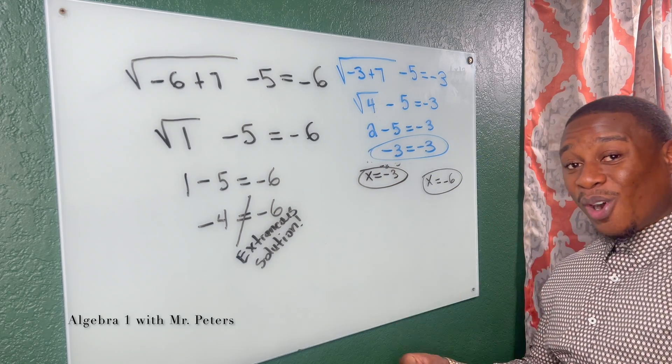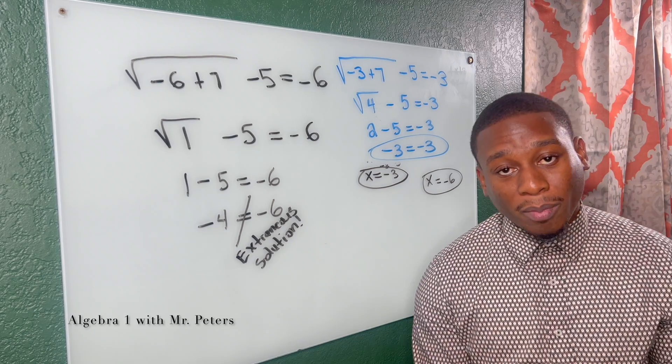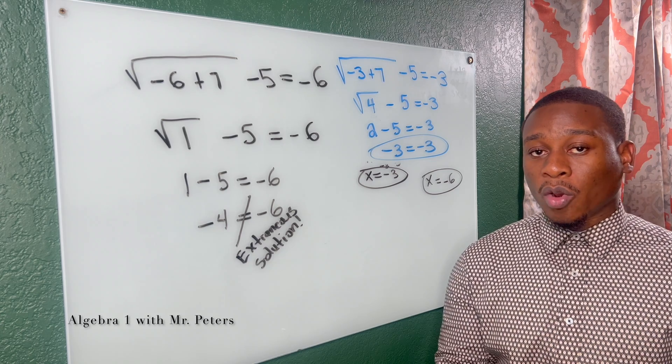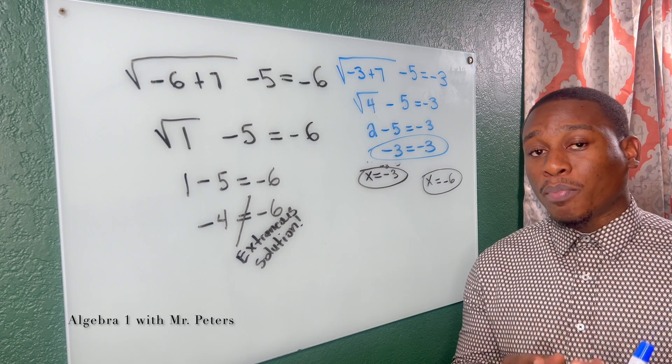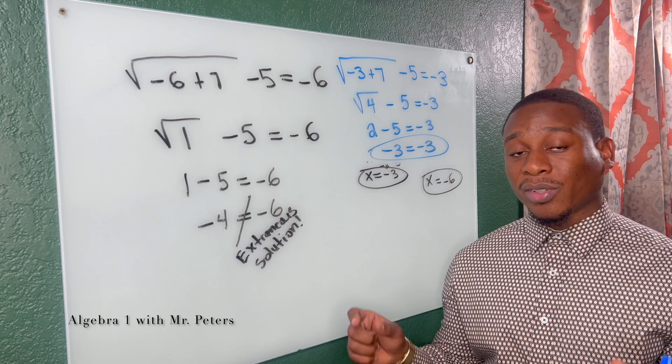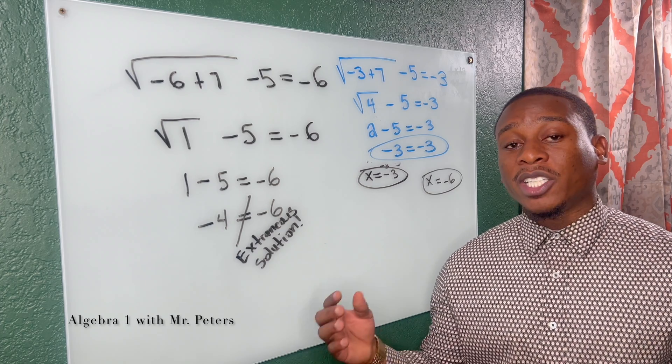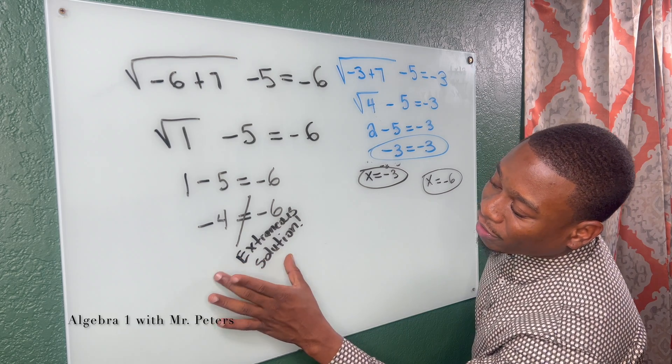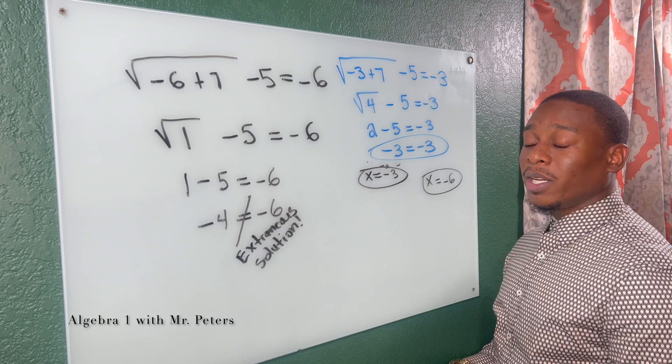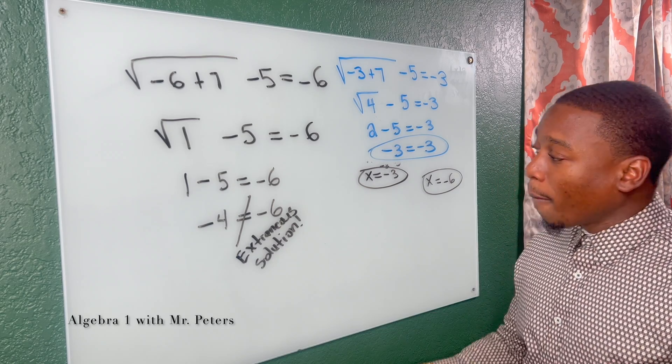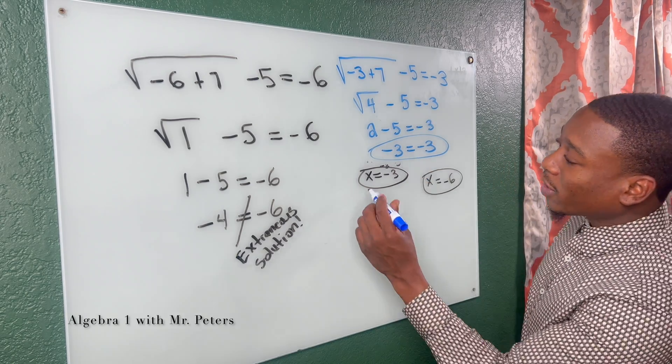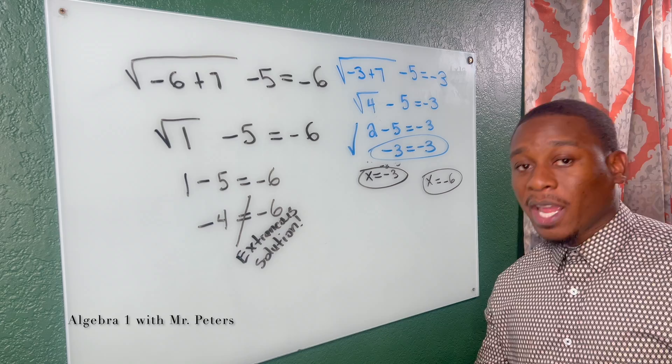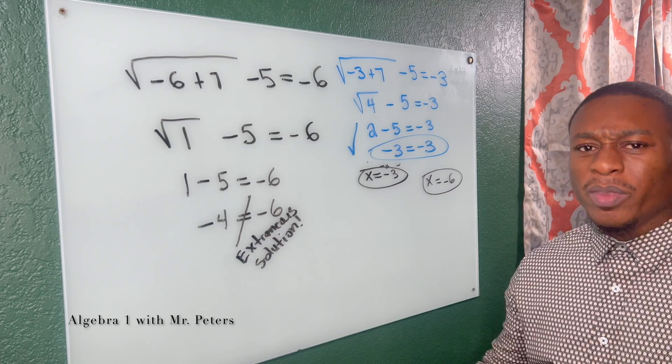So wrapping this on up today, guys, when we're talking about extraneous solutions, after we solve for a quadratic equation or a radical equation, it's important that we plug the answers back into the original equation and check. If our answers or the equation, the left side doesn't equal the right side, it's not a true statement, meaning it's an extraneous solution. But if when we plug it in, the left side equals the right side, that means that is the actual solution and we can negate or forget about the other one.